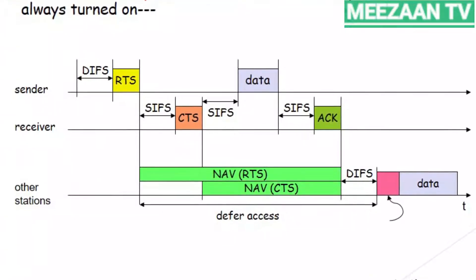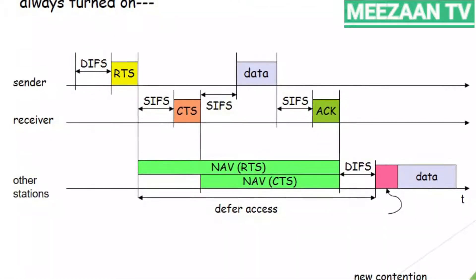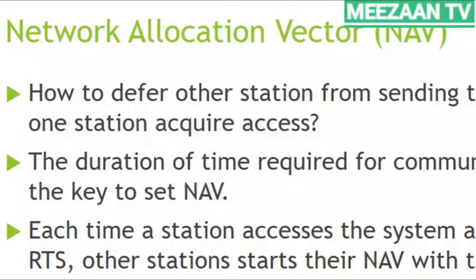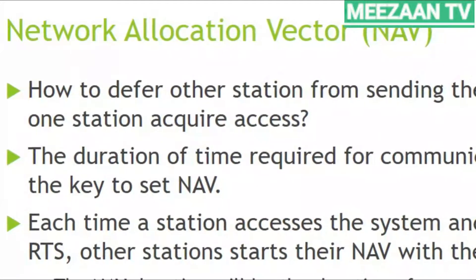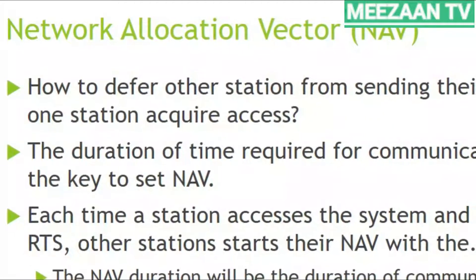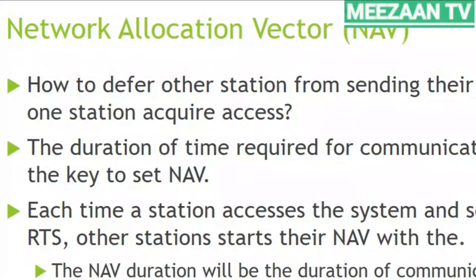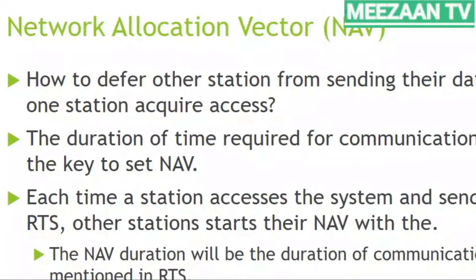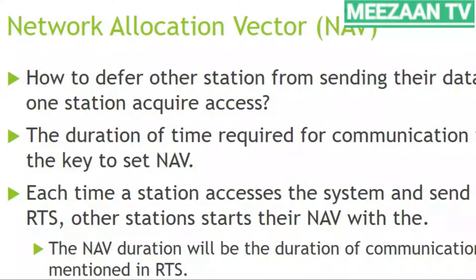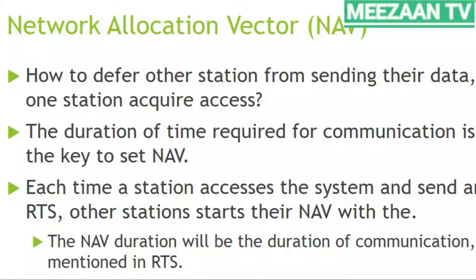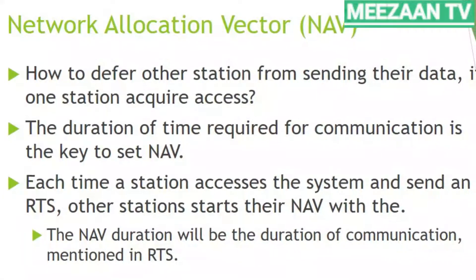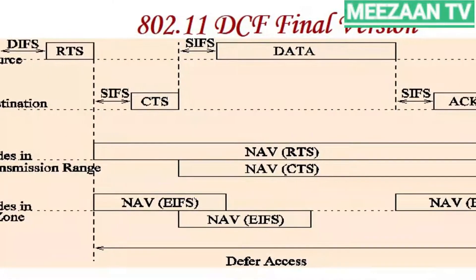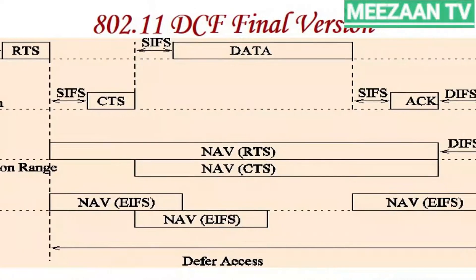The destination station, after waiting a SIFS period, sends an acknowledgement to confirm the frame was received. Acknowledgement is needed because the station has no other means to verify successful arrival of data. The Network Allocation Vector (NAV) defers other stations from sending. When a station sends an RTS frame, it includes the duration needed to occupy the channel, and other affected stations create a NAV timer showing how much time must pass before they may check the channel for idleness.